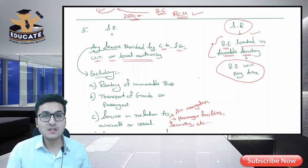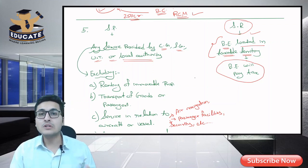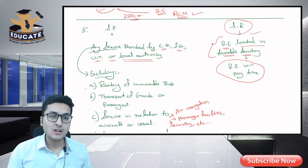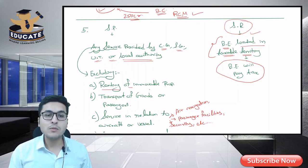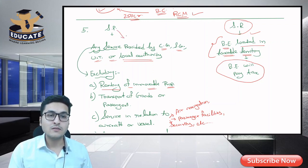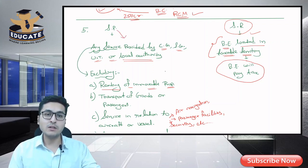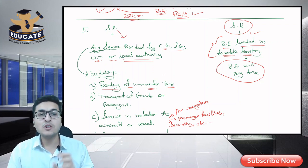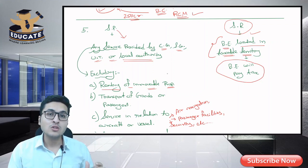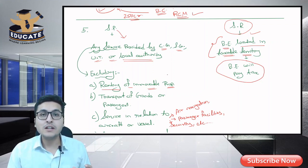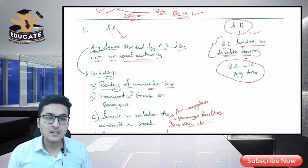However, not all services are covered — some are excluded. Excluded service number one: renting of immovable property. If Central Government, State Government, Union Territory, or Local Authority rents immovable property to a business entity, then the business entity does NOT need to pay tax under RCM. Second excluded service: transport of goods or passengers — RCM does not apply in this case either.